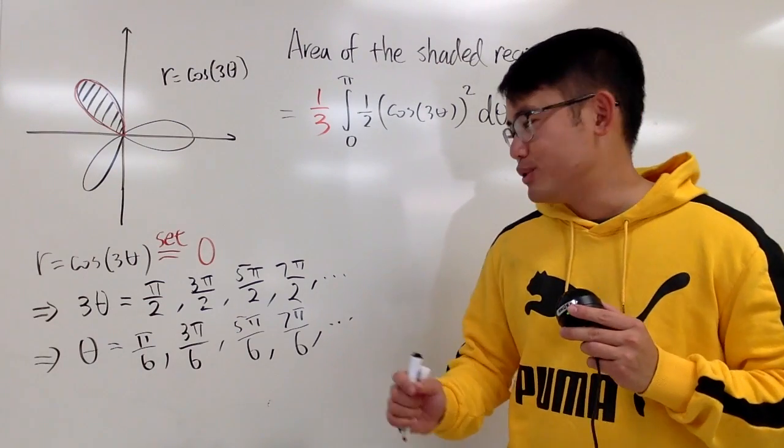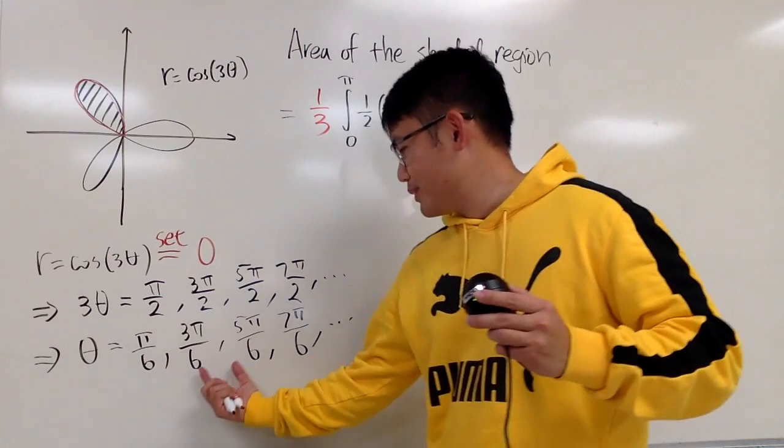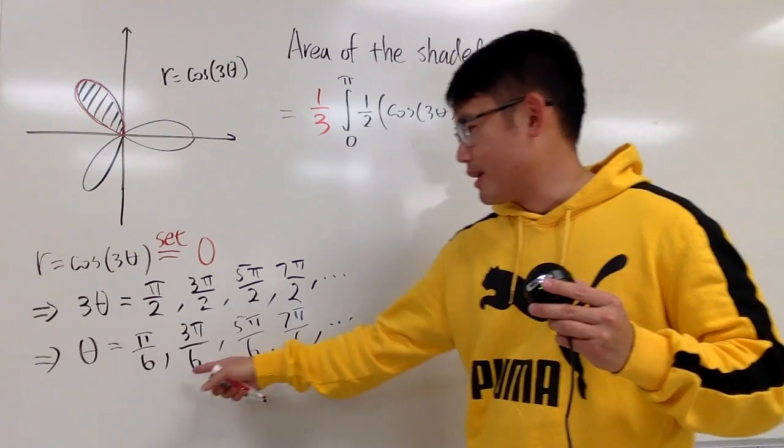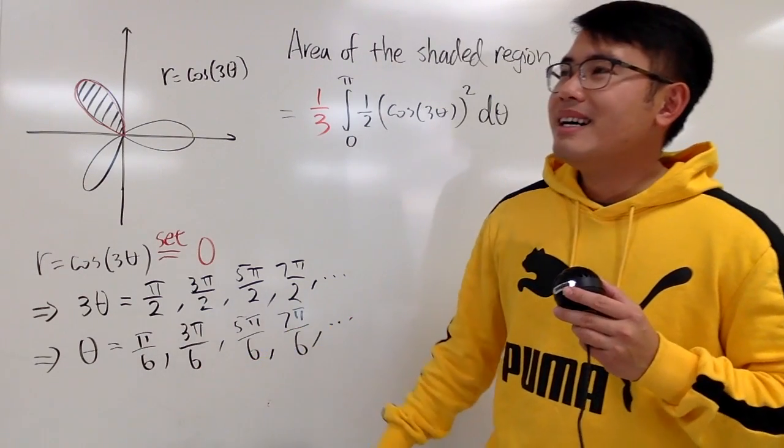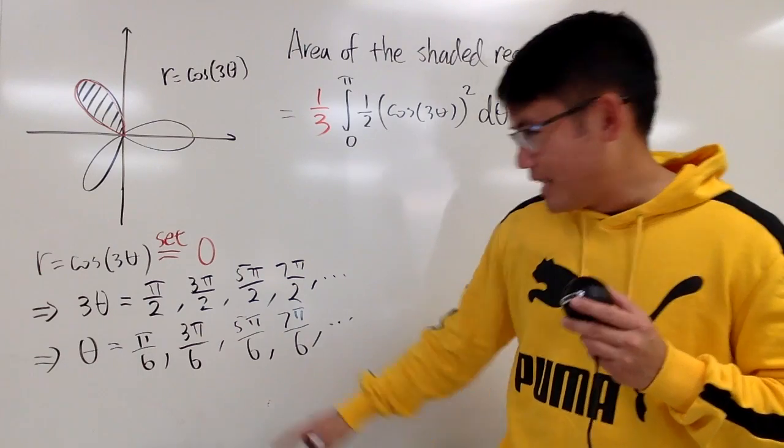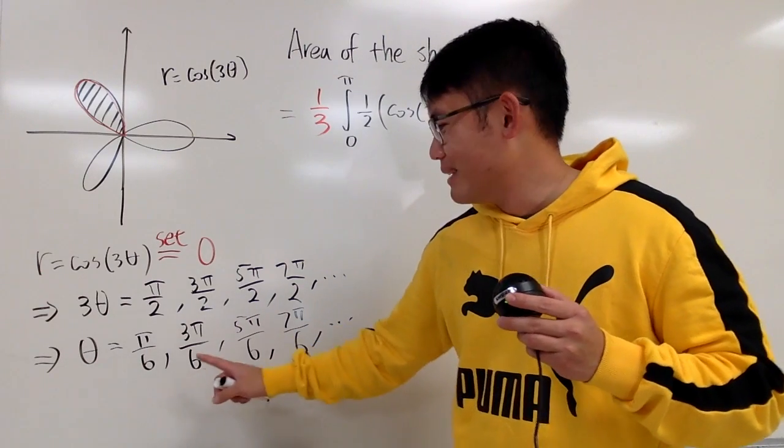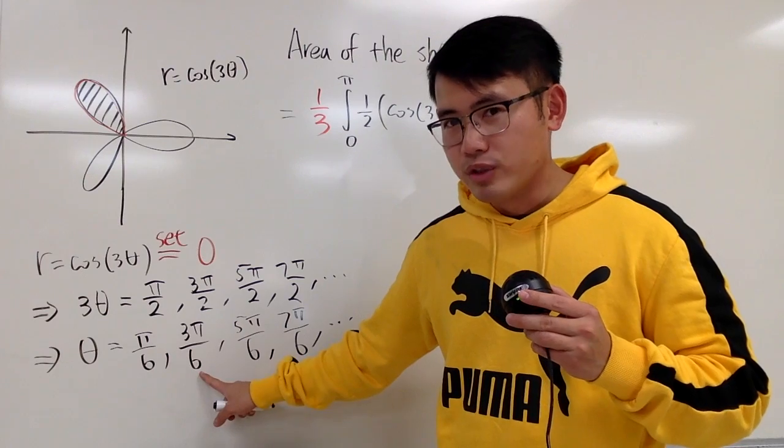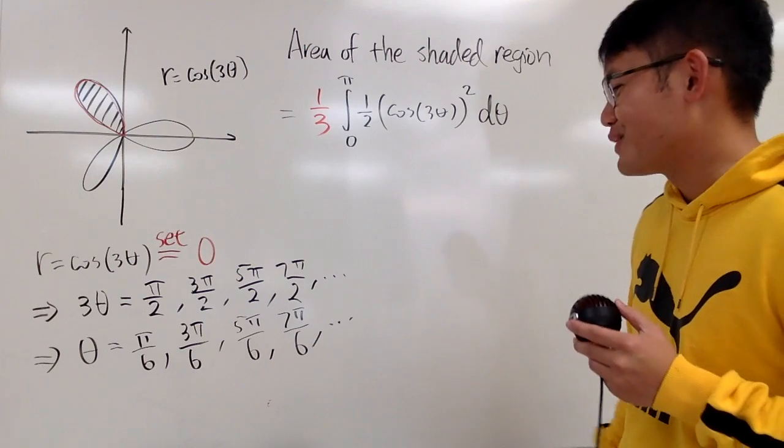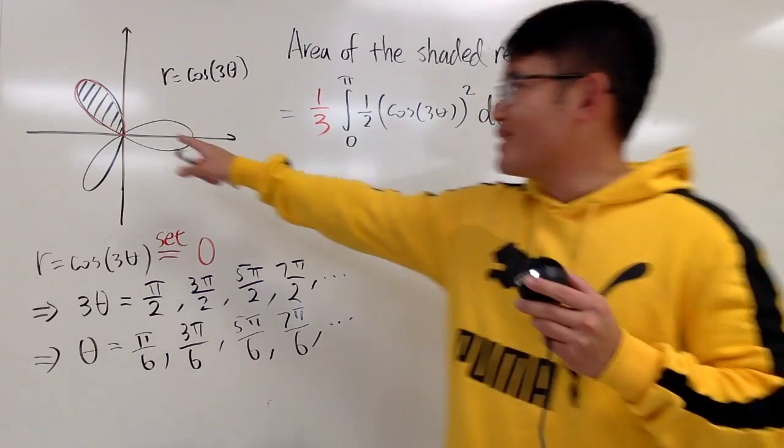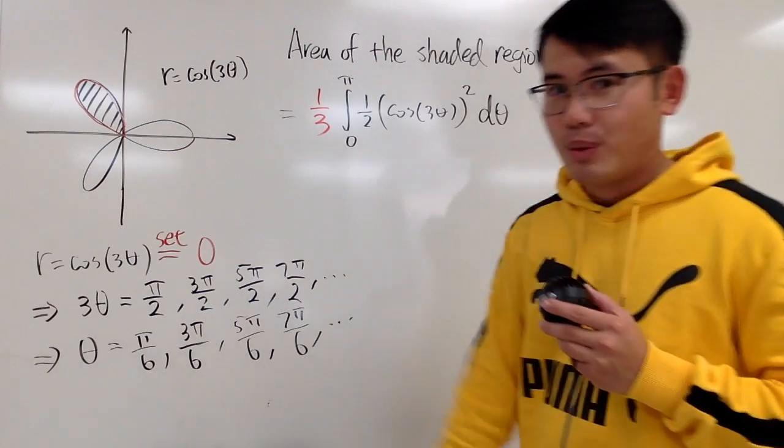Now, the truth is, you can actually just use any of these two. Any consecutive pair. Because when you hit the origin, and then the next time you hit the origin, you have a loop. So that's pretty much what you can do. But if you really want to have this pattern right here, this is how you do it.